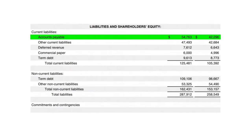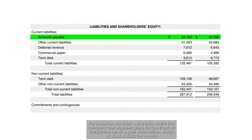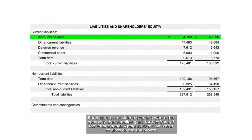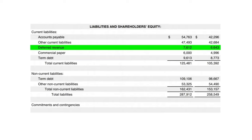Now let's delve into the liability section, starting with accounts payable — the counterpart to accounts receivable. While accounts receivable is money owed to the company by its customers, accounts payable is the money Apple owes to its suppliers for products and services already received but not yet paid for. For instance, if the supplier of glass for the iPhone sends Apple $100 million worth of glass, that unpaid amount appears as accounts payable — essentially a record of the company's outstanding bills to its suppliers.